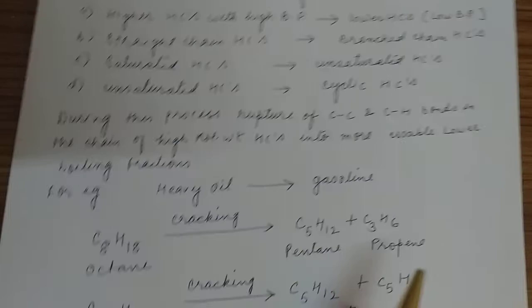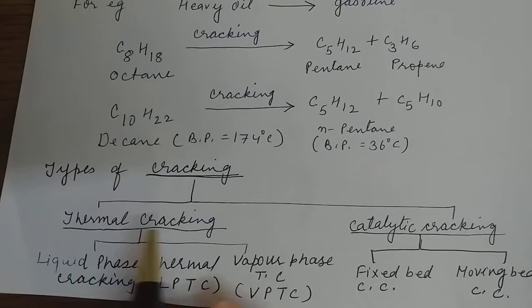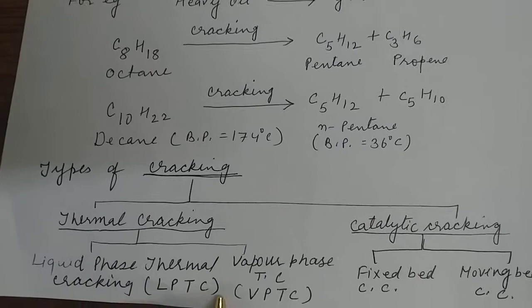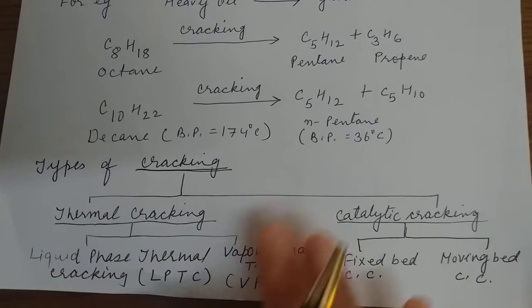The types of cracking we discussed in last class are thermal cracking and catalytic cracking. Thermal cracking is the cracking carried out in the presence of high temperature. It is of two types: liquid phase thermal cracking (LPTC) and vapor phase thermal cracking (VPTC). The cracking carried out in the vapor state is called vapor phase thermal cracking.